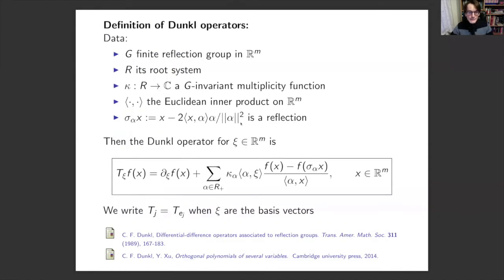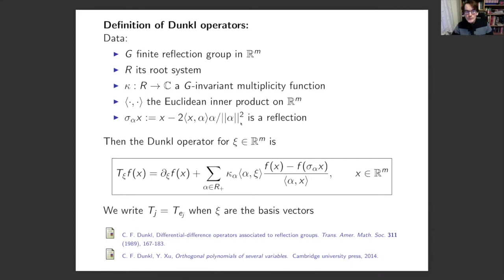So what are Dunkl operators? The theory carries quite a bit of formulas, which can be a little bit long, but I'll try to focus on what is really important. We define these Dunkl operators in R^M, Euclidean space of dimension M. What do we need? We need a finite reflection group G. This finite reflection group has a root system — let's call it R — and let's select a positive system within R. We need a multiplicity function: a function kappa that maps the root system to the complex numbers.